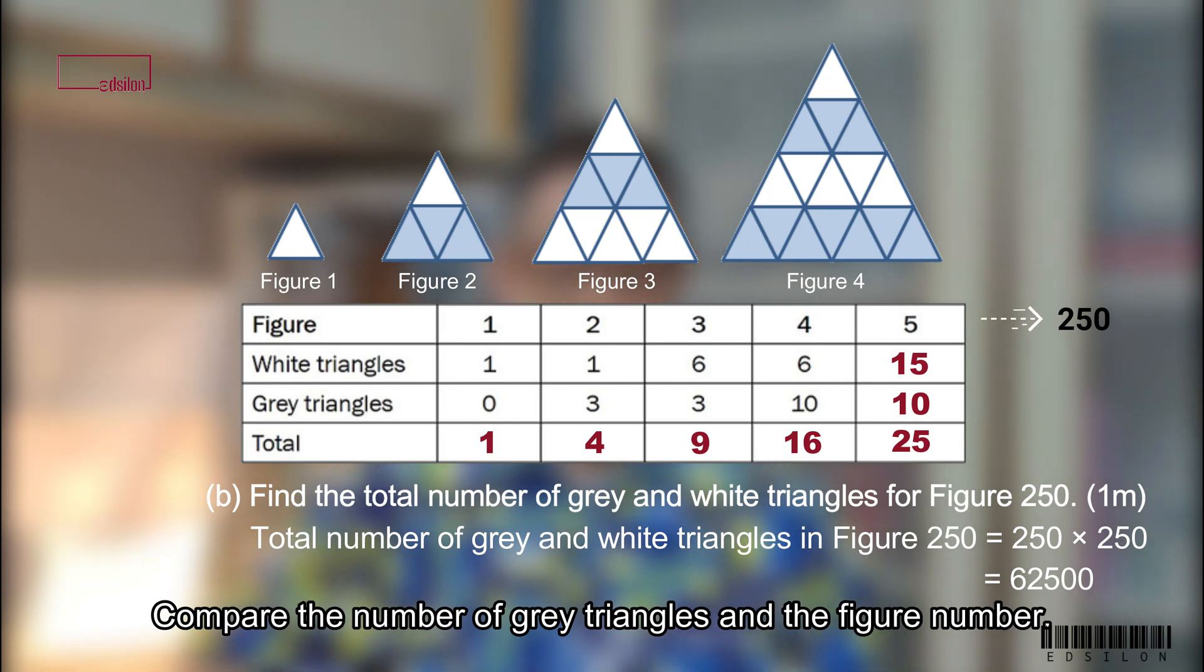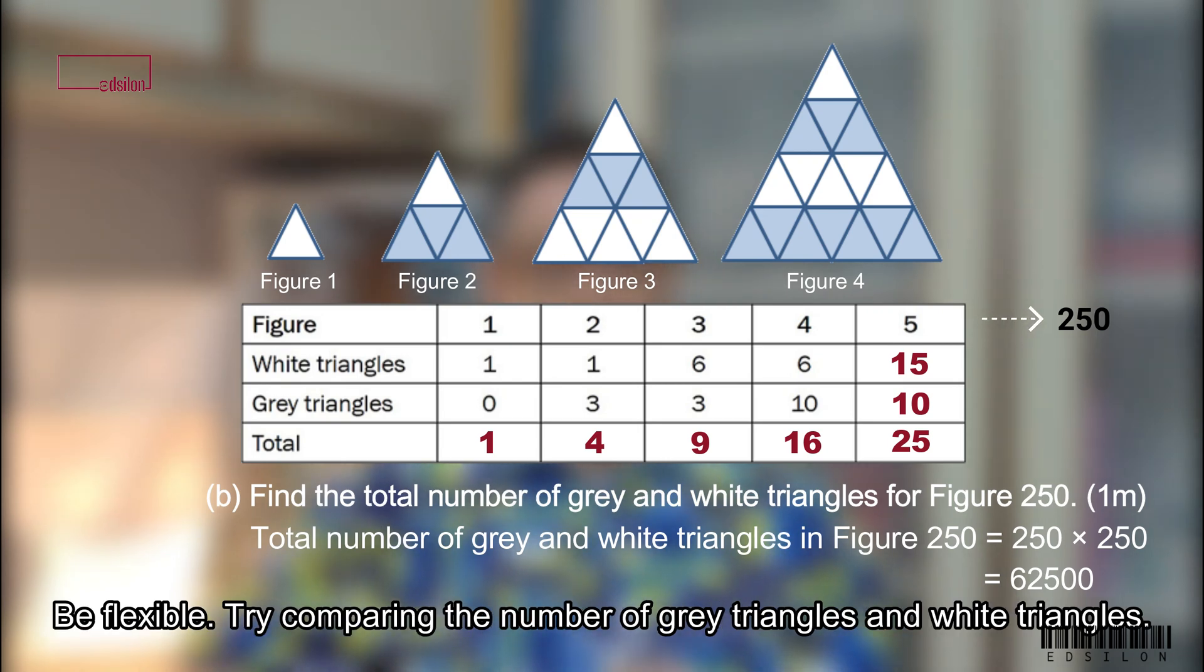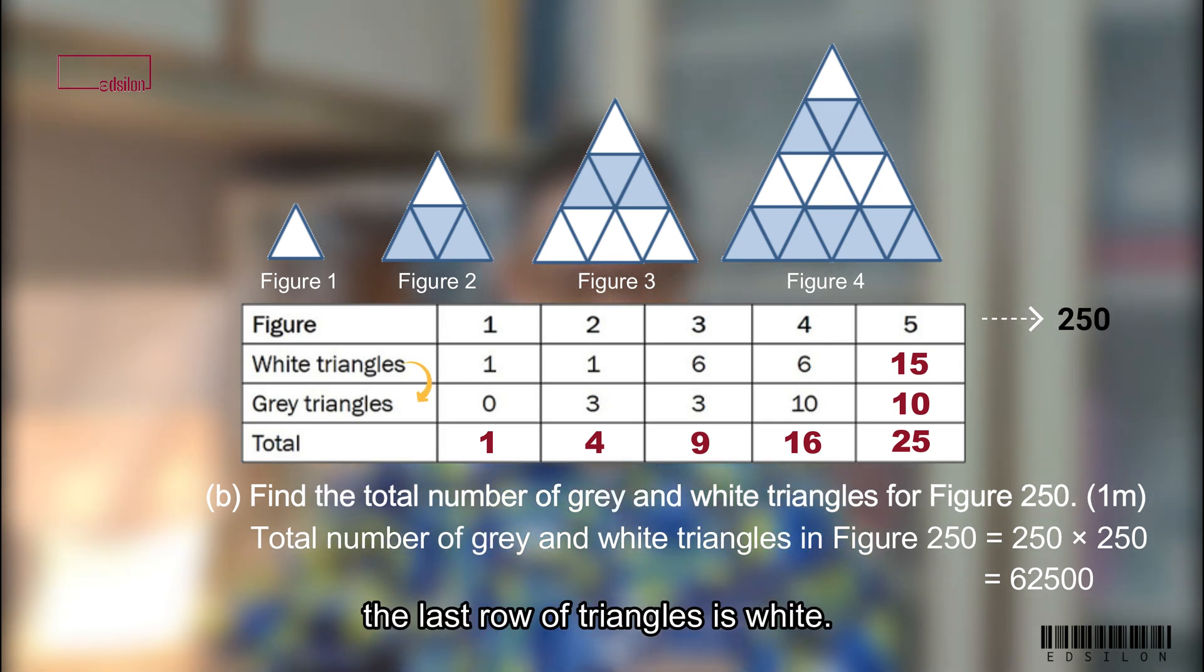Compare the number of grey triangles with the figure number. See any pattern? Not obvious, right? Be flexible. Try comparing the number of grey triangles and white triangles. For odd numbered figure, example figure 1, 3 and 5, the last row of triangles is white.